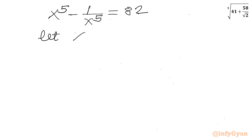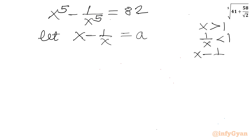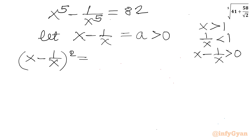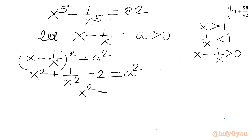From this equation we have to calculate x. Let us use substitution: let x minus 1 over x equal to a. Since x was greater than 1, then 1 over x will be less than 1, so x minus 1 over x will always be greater than 0, meaning a should be greater than 0. Now squaring: x minus 1 over x whole squared equals a squared. Applying the a minus b whole squared formula, x squared plus 1 over x squared minus 2 gives a squared, so x squared plus 1 over x squared equals a squared plus 2.